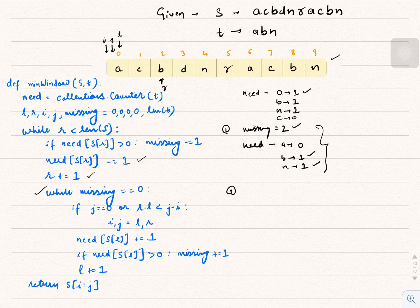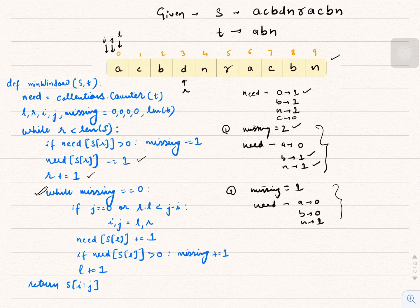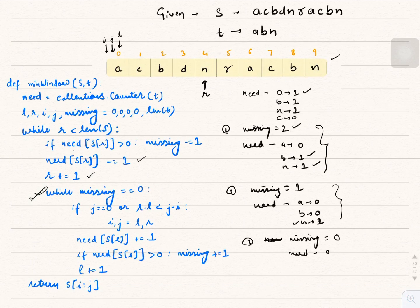D's count is not greater than 0, so `missing` and `need` stay the same — R just increments to N. `need[N]` is 1, greater than 0, so `missing` becomes 0 and `need` becomes A→0, B→0, N→0. R increments to index 5. With `missing`=0, we have found a window containing all characters A, B, and N.